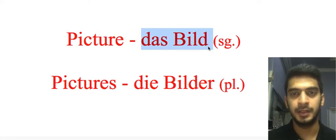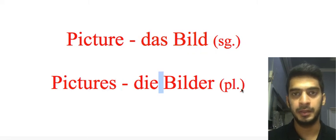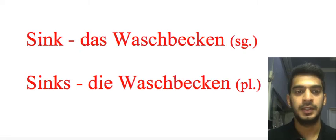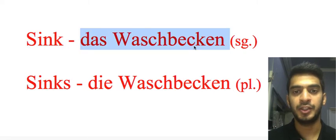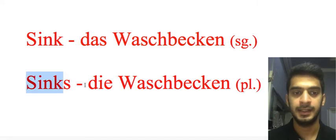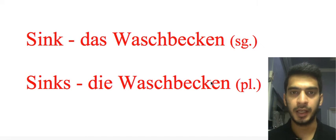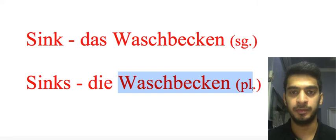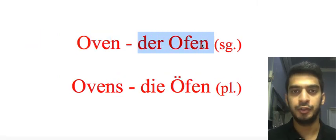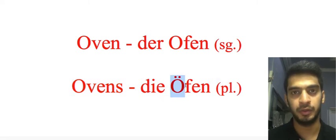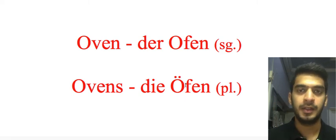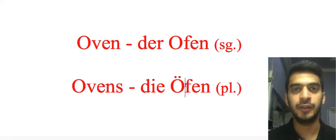'Picture': 'das Bild' — singular; 'die Bilder' — plural, extra ER at the end. 'Sink': 'das Waschbecken' — singular; 'die Waschbecken' — plural. No change in spelling. 'Oven': 'der Ofen' — singular; 'die Öfen' — plural. In the plural we have O with umlaut, pronounced 'ö', so 'die Öfen'.